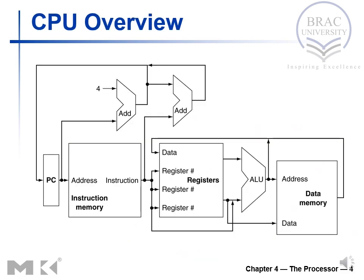This is a high-level overview of the CPU components involved in executing any instruction. The first component is the program counter, which generates the memory address for the instruction inside the instruction memory. The system reads that instruction memory to bring the instruction and feed it into the decode stage. In the decode stage, the instruction gets identified.